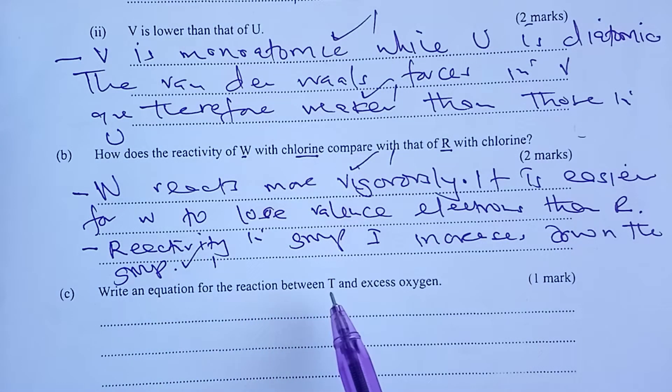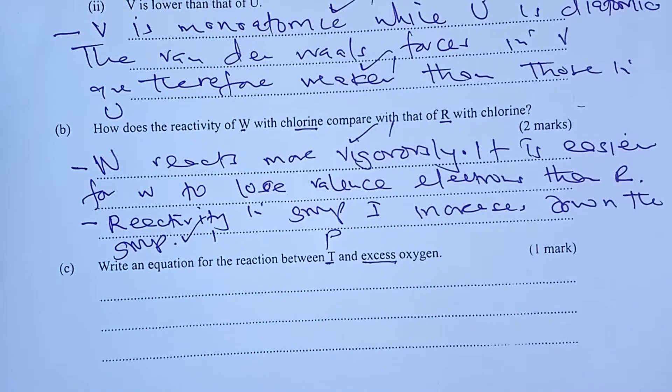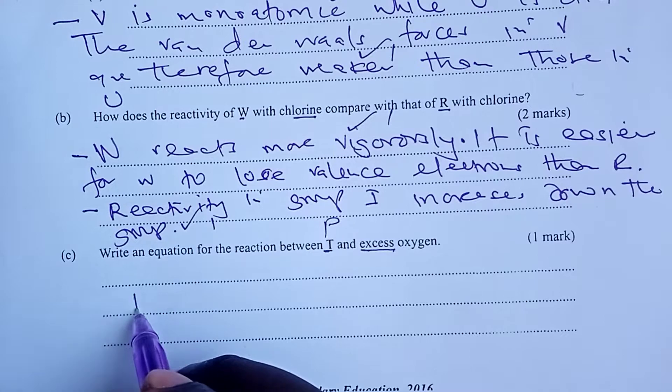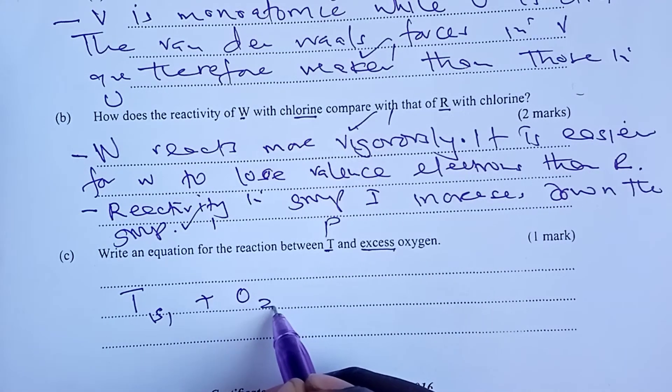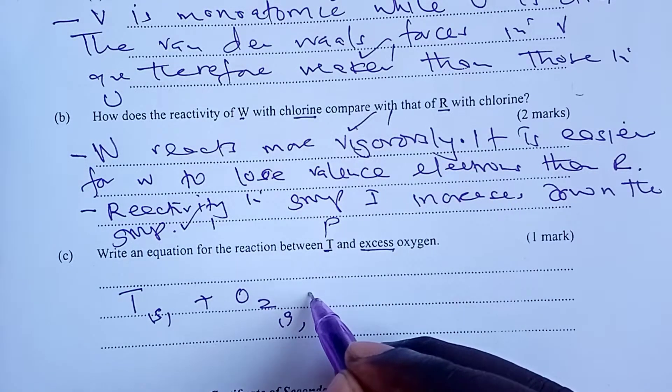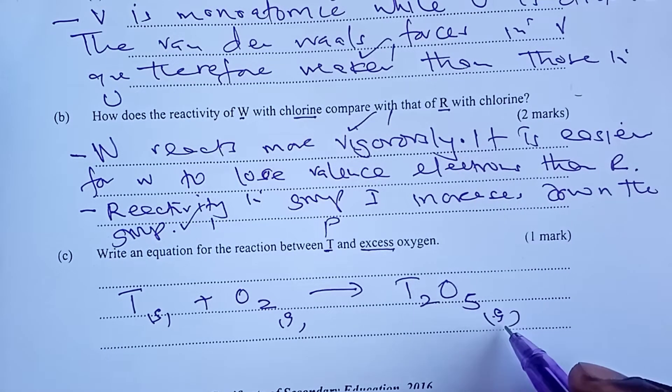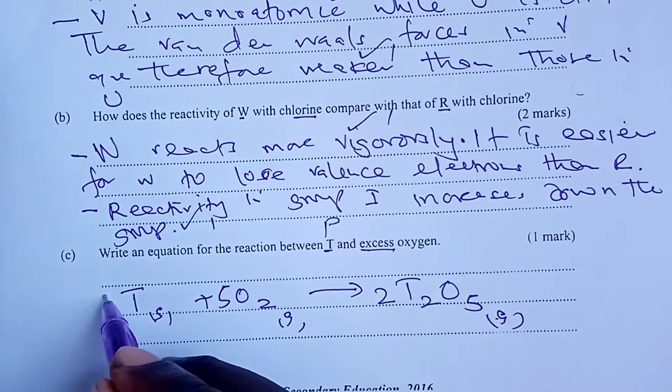Moving on to the next question: write an equation for the reaction between T—T is our phosphorus—and here with excess oxygen. Phosphorus can react with oxygen to give two oxides, depending on the amount of oxygen that is available. We have phosphorus 3 oxide, and phosphorus 5 oxide, and because for this case, we had excess oxygen, we would form the higher oxide, which is phosphorus 5 oxide. T with O2, you get phosphorus 5 oxide, or T2O5, which would be gas. We balance with a 2 on our oxide, a 5 on oxygen, and a 4 on T.